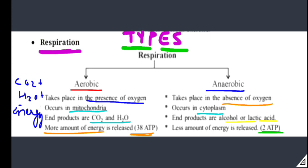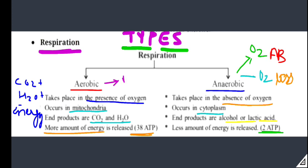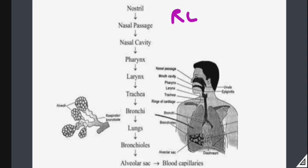So those were the differences between the two types of respiration. In anaerobic respiration there are two conditions: either oxygen is completely absent, or oxygen is less. Aerobic respiration deals with the presence of oxygen. This breakdown of food process should now be clear from these types of respiration.